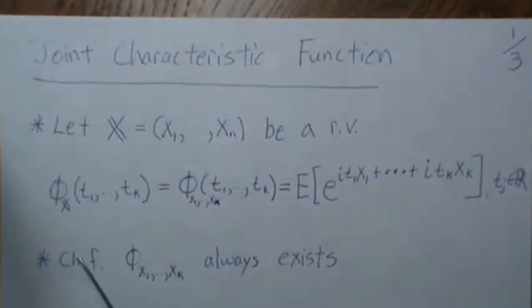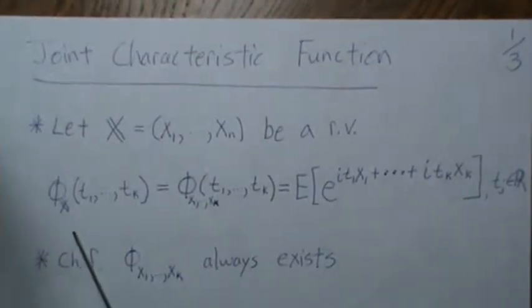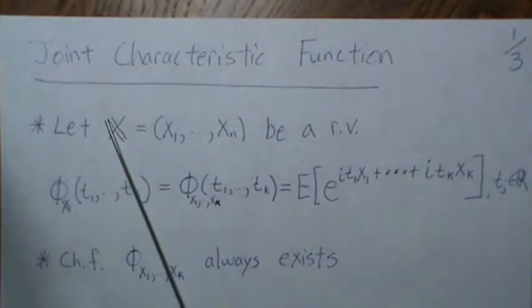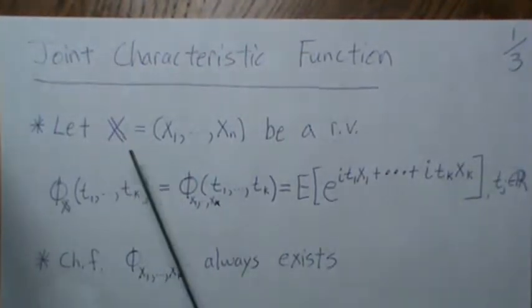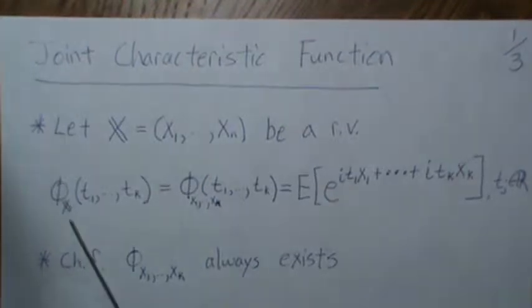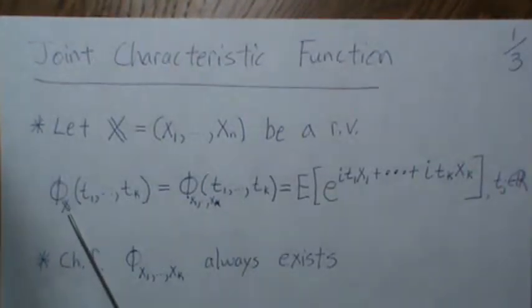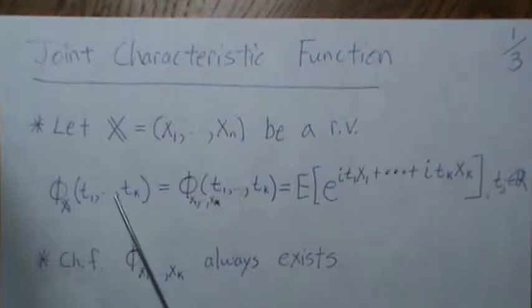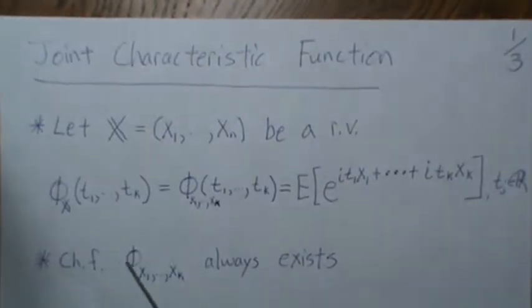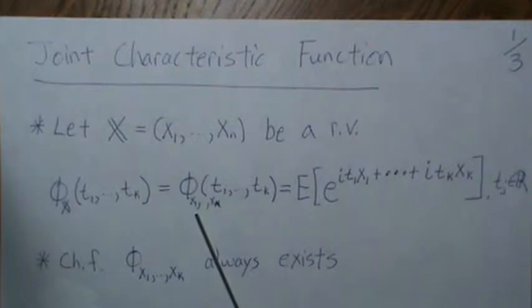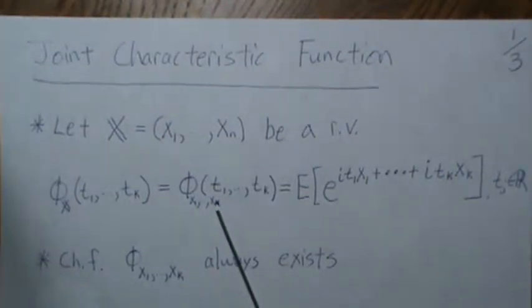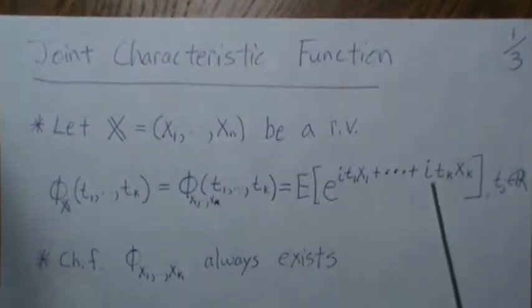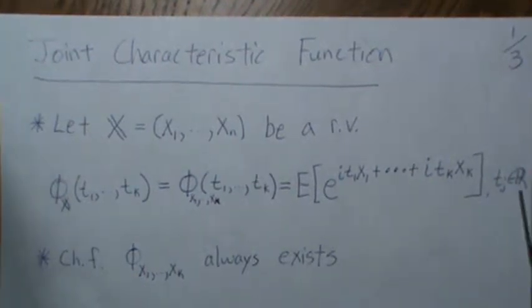And we're going to define the joint characteristic function. Here's notation. So here this is my attempt at a script X or a bold X, which is going to be a vector. And so you can put the script X here, and then T1 through TK. You can actually just call it T and indicate it's a vector also. Or you could explicitly write out X1, X2, X3, all the way to XK, and then T1 through TK. And that's the expected value of E to this summation here, where the TJs are real.